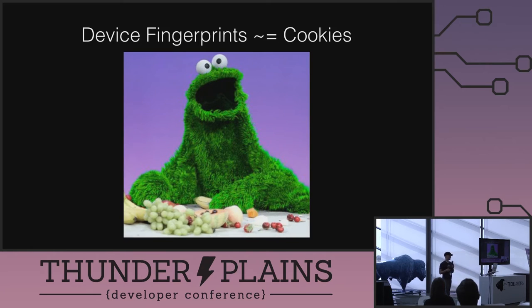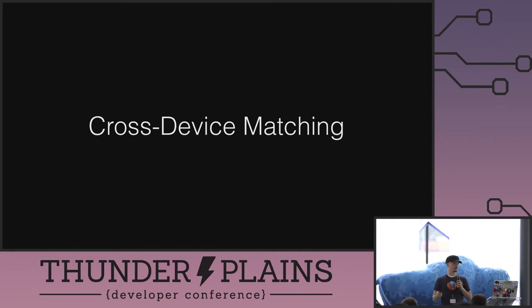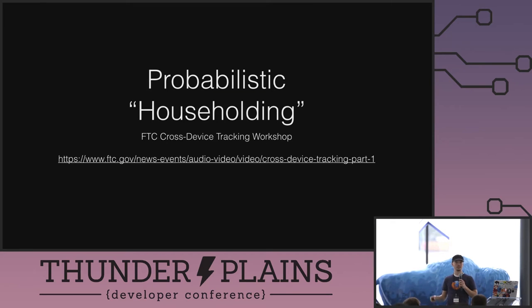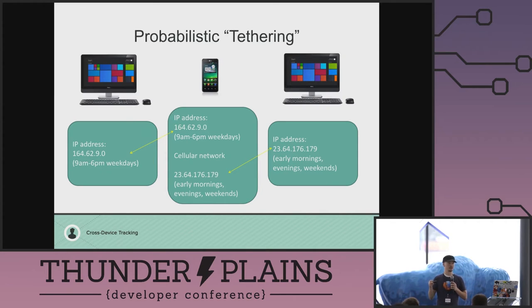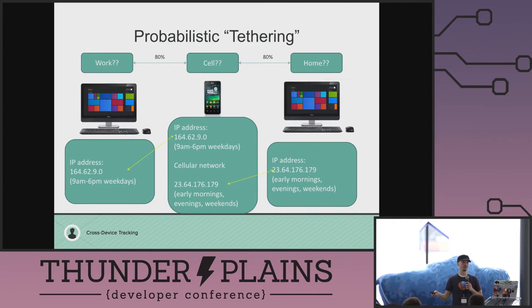You can think of device fingerprints like cookies — if there's active JavaScript on the page, it can generate the equivalent of a cookie. A lot of trackers are moving beyond cookies and into fingerprints. Cross-device matching — trackers want to track you across devices, not just one particular iPhone or TV. There's probabilistic householding: you've got a desktop, phone, and another desktop, all tagged with cookies or Android advertising IDs. In traffic logs, a particular ID connects from IP address X, and a phone connects from the same IP address 9am to 6pm. That same phone connects from another IP in the mornings, evenings, and weekends — as does another machine. They've essentially said, 'we're 80% sure this is their work computer, home phone, and home computer' just based on IP addresses.